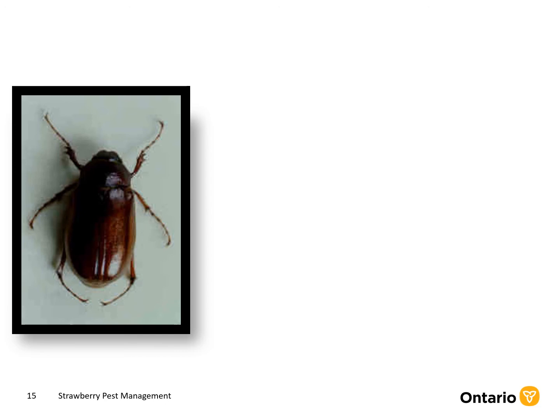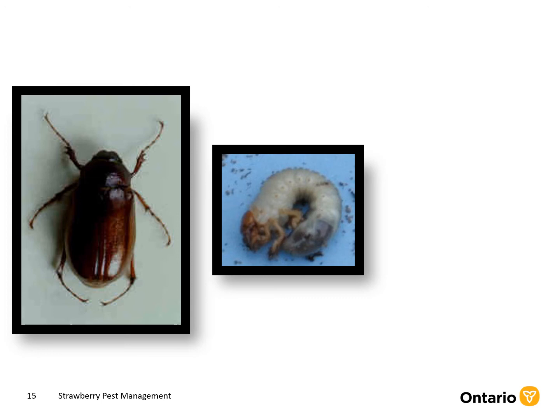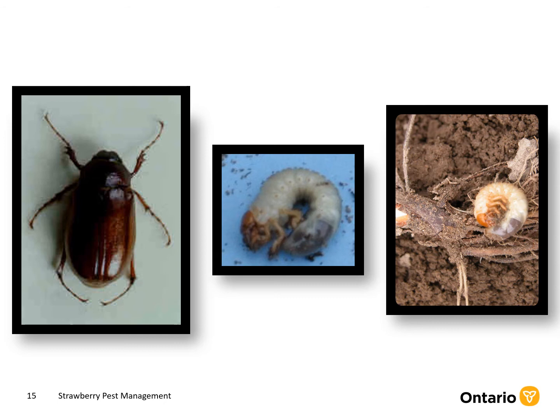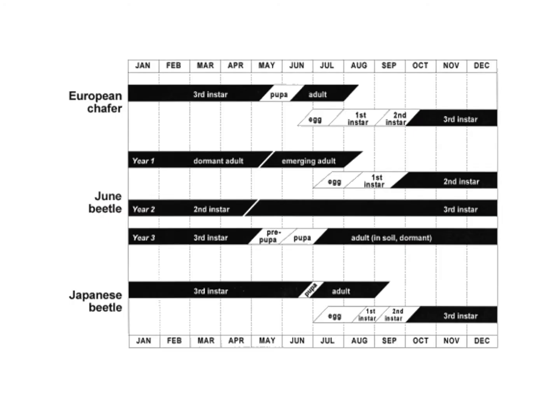The adult beetles usually lay their eggs at the beginning of summer in soil, sod, or other grassy places. It takes two to three weeks for the eggs to hatch. The larvae feed on the roots of strawberry plants throughout the summer. When colder temperatures arrive, they bury themselves deep in the soil and overwinter. In spring, they migrate to the root zone to feed, and by this time they are larger and therefore cause more damage. European chafer and Japanese beetle larvae stop feeding, pupate, and emerge from the soil in the late spring. June beetle larvae continue to feed for two full years, then feed briefly, pupate, and emerge as adults the following spring.